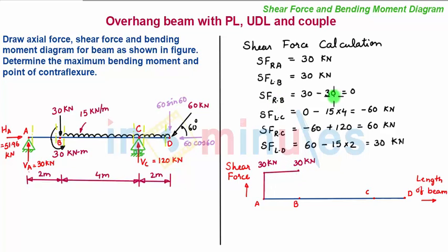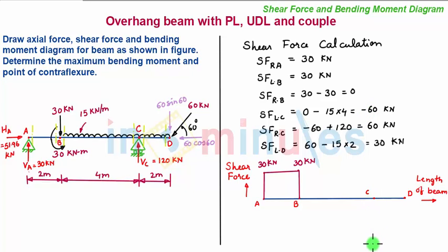Now the shear force towards the right of B is 0 kN, so the shear force decreases to zero at point B. Moving to point C, the shear force towards the left of C is minus 60 kN. So at point C, using a proper scale, I plot a point of minus 60 kN since negative shear force is below the zero line.